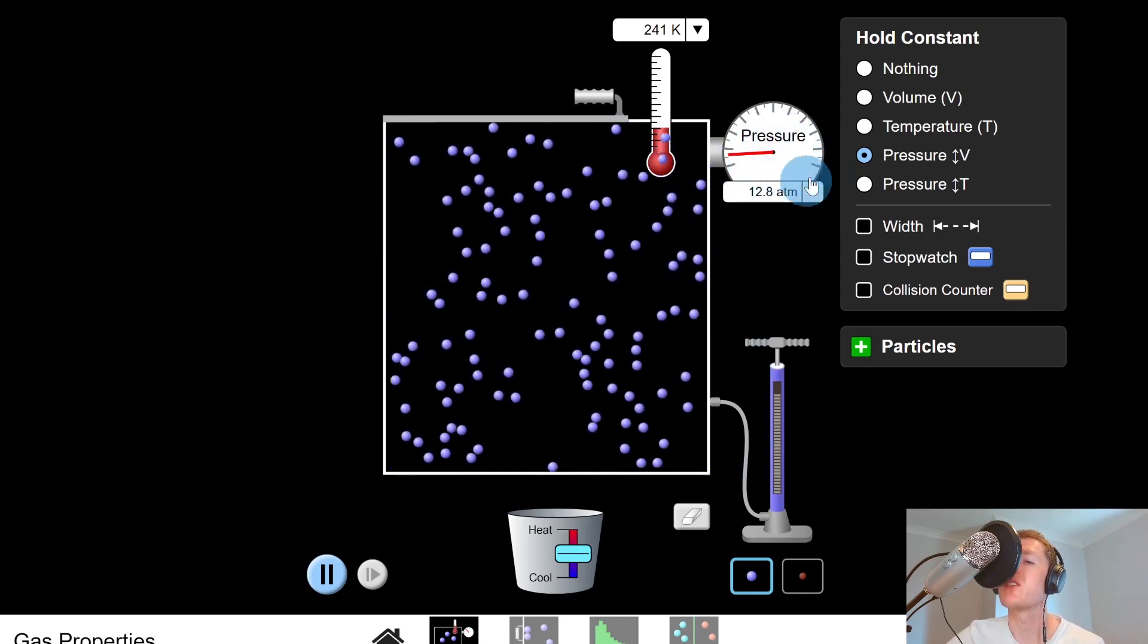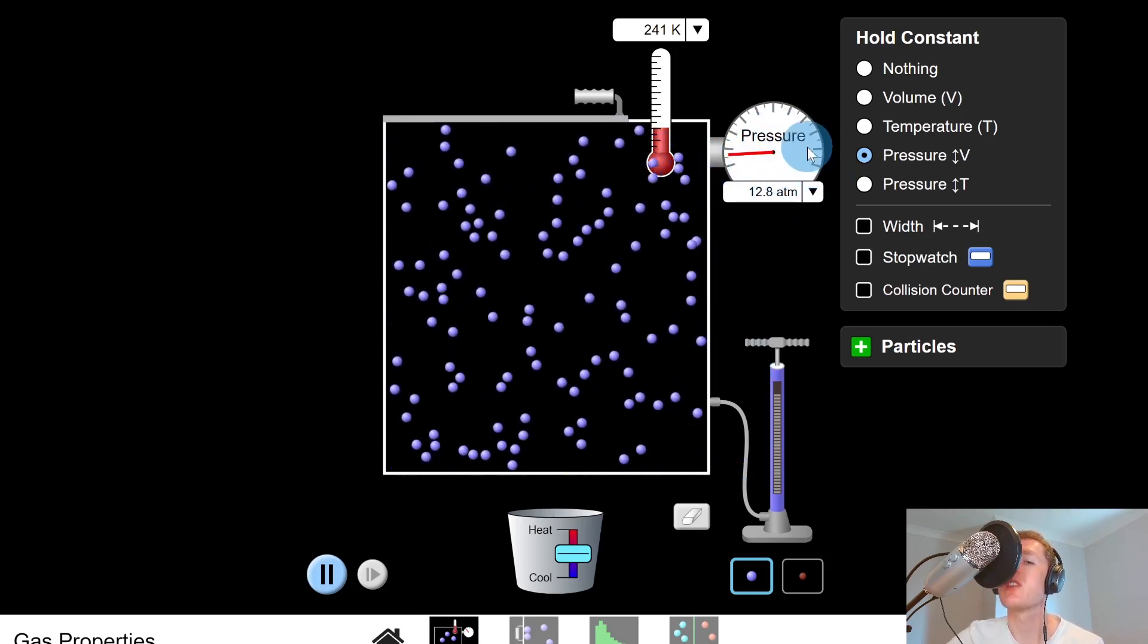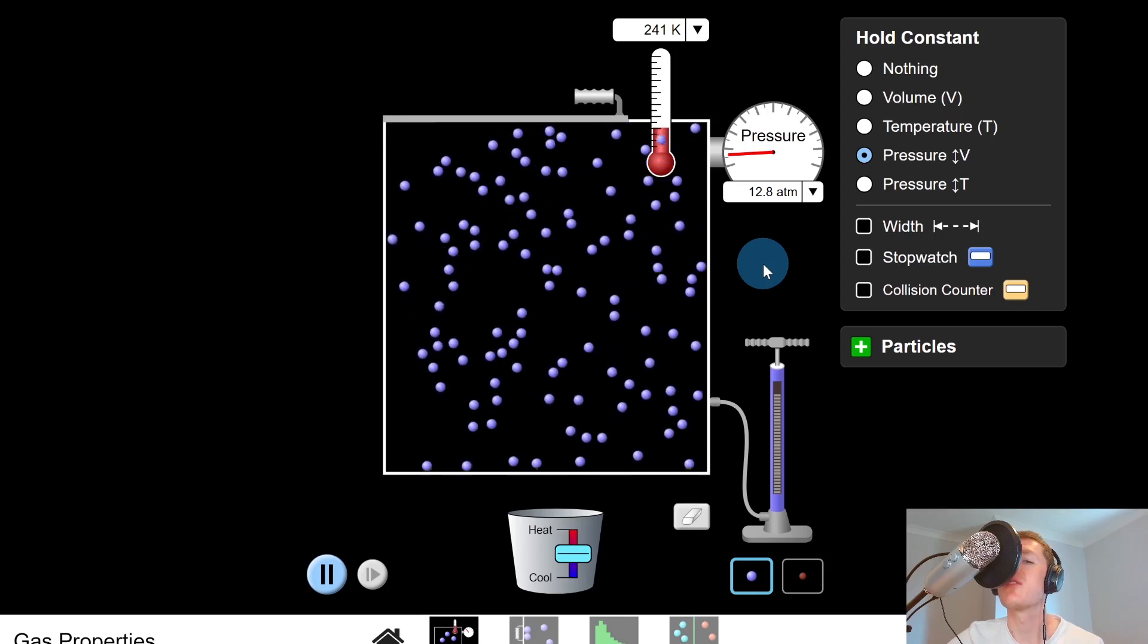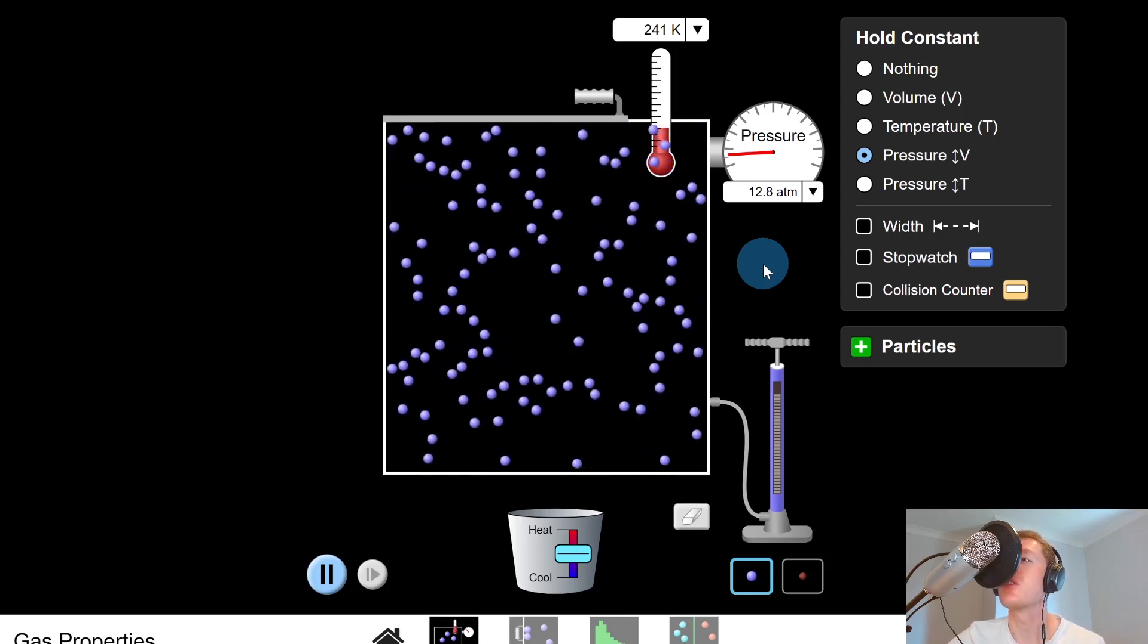But again, we want to keep pressure the same. So in order to keep pressure the same, we need to decrease the volume of the container, i.e. decrease the volume of the gas.